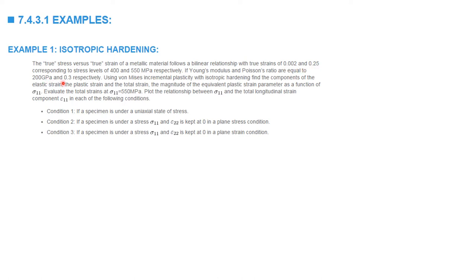Young's modulus and Poisson's ratio are given in the example. There are three loading conditions for which we need to calculate the elastic and plastic strain components. In the first, a specimen is under a uniaxial state of stress and the stress increases up to 550 MPa. In the second, a biaxial state of stress where sigma_1 increases to 550 MPa while sigma_22 is such that epsilon_22, the total strain, is kept at 0.002. In the third, a specimen is loaded in a triaxial state of stress: sigma_1 increases to 550 MPa while epsilon_22 is kept at 0.002 in a plane strain condition, implying epsilon_33 is also equal to 0, so stresses sigma_22 and sigma_33 keep both epsilon_22 and epsilon_33 equal to 0.